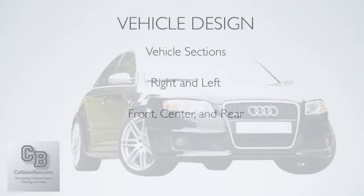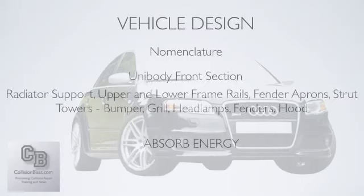You also have sections: the front section, which is basically from the windshield forward; the center section, which is the passenger compartment from windshield to back glass; and then the rear section, which is your trunk area. Those are the three sections. It's also important to understand the names of the parts — the nomenclature — so that whether you're ordering parts, repairing a part, or reading a repair order, you have an idea of what these parts are called.